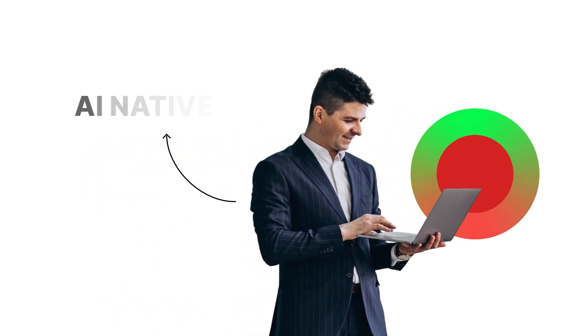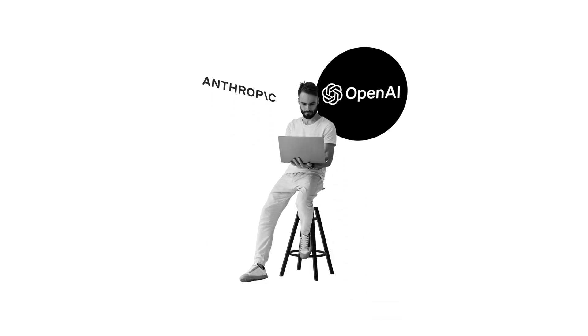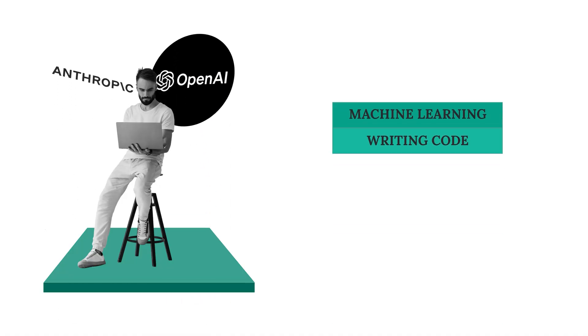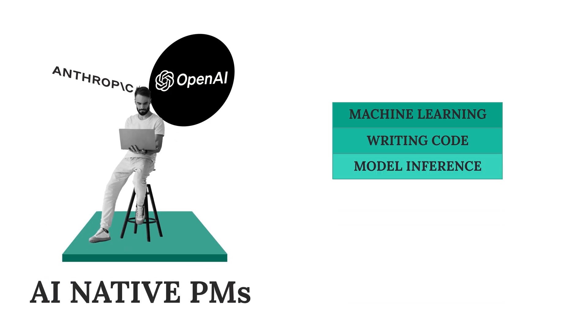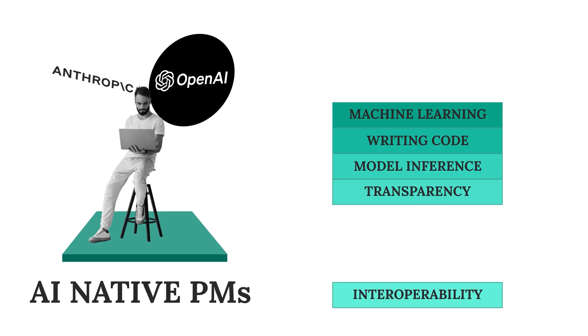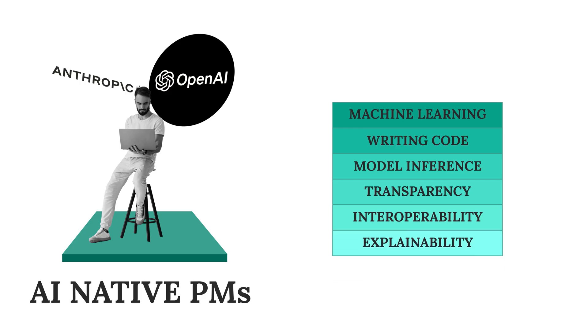This is where the role of an AI-native PM comes in — how do you enable the intelligence to become better with better data, better modeling, and better infrastructure. People who come from this background and help improve foundational models at places like OpenAI and Anthropic are AI-native PMs. They come from a machine learning background, can write code, improve models, and understand model inference, transparency, interoperability, and explainability to give better responses from generative AI tools.